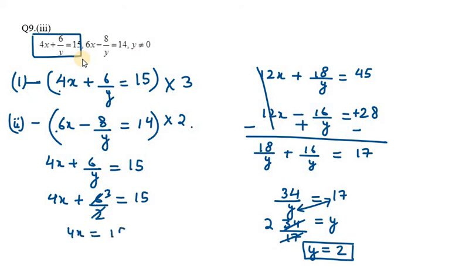4x equals 15 minus 3. Bringing 3 to the right side: 15 minus 3 is 12. So 4x equals 12, which means x equals 12 over 4, which is 3.